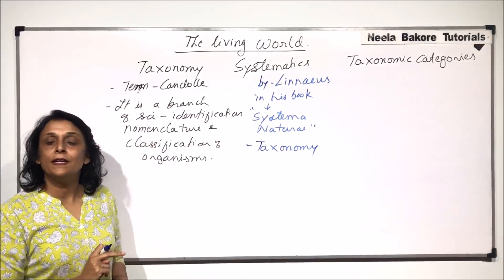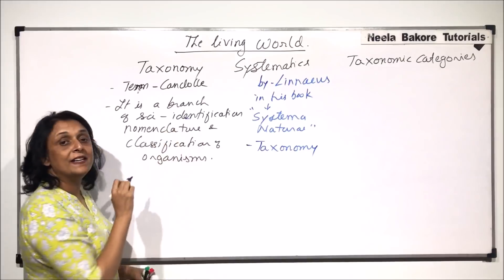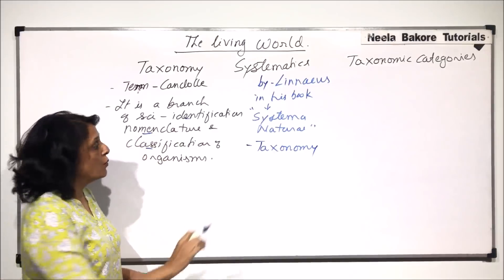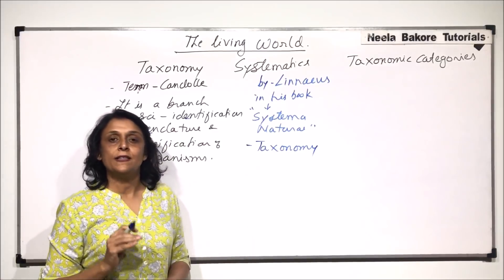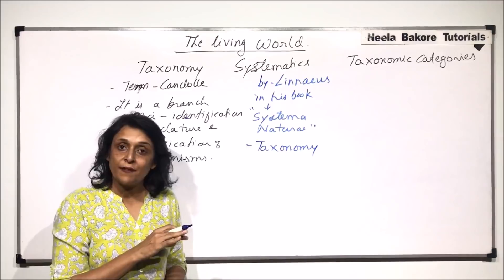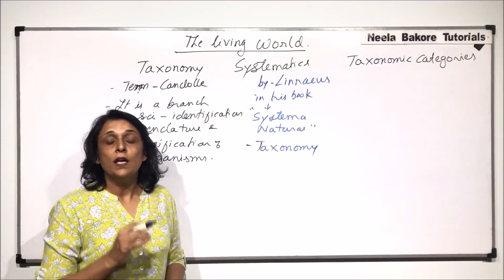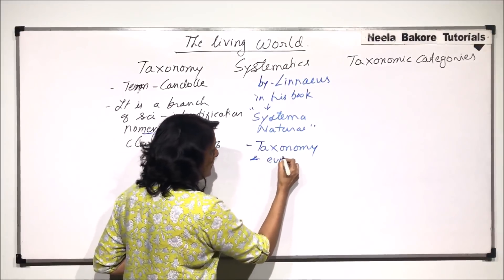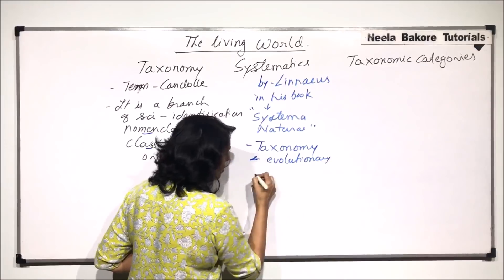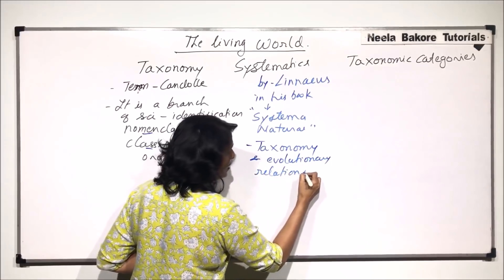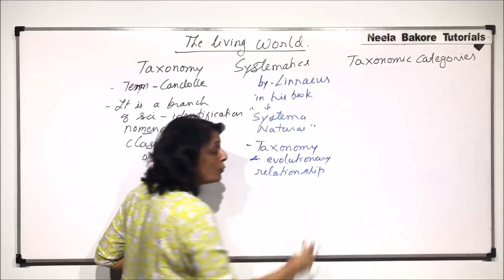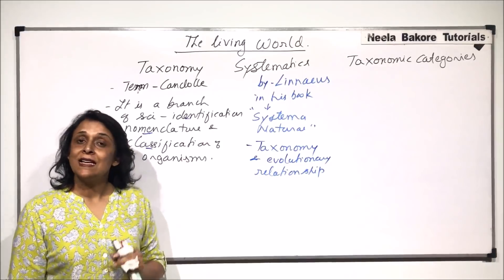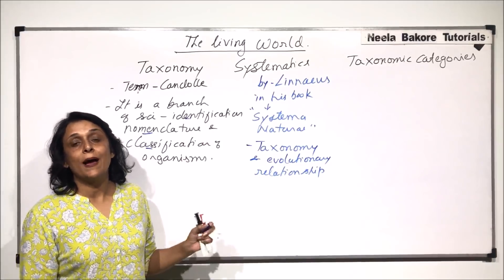We have just defined taxonomy — identifying, naming, and classifying organisms. So what exactly is systematics? We identify organisms, name them, classify them, and we also study the evolutionary relationship. So systematics is taxonomy plus the evolutionary relationship between organisms in various categories. It was first used by Linnaeus.